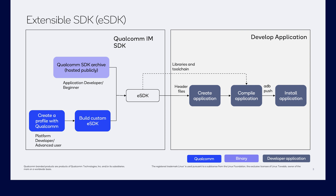The first step in the process is to download the product SDK or compile the SDK from source. Once downloaded, unzip and install the platform eSDK. Then you can create your own customized applications. In the final step, you can compile and install your application to a device.